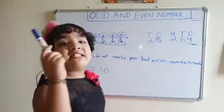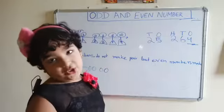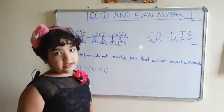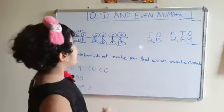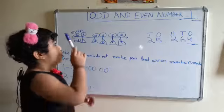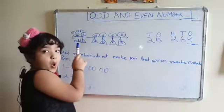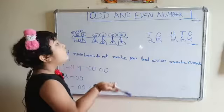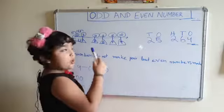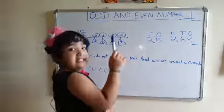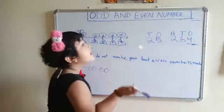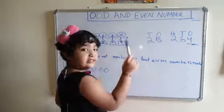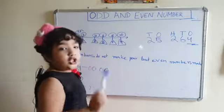Then our second question is: what is an even number? Even numbers are 0, 2, 4, 6, 8 and 10.